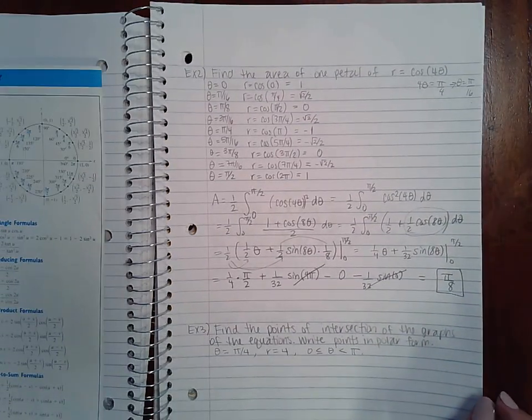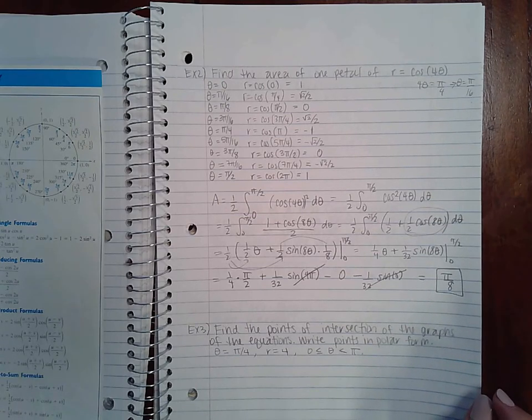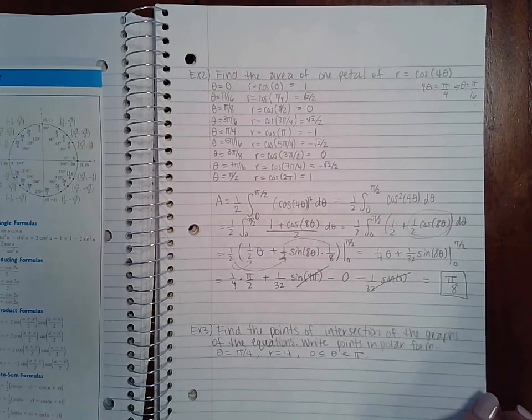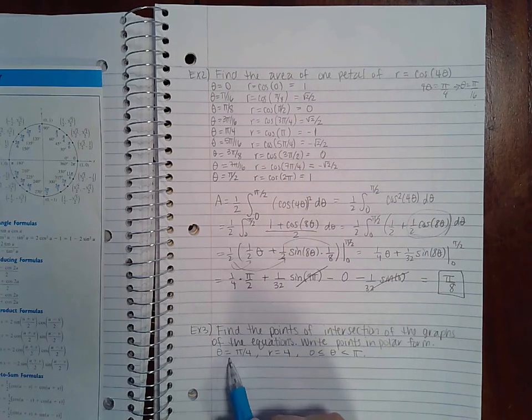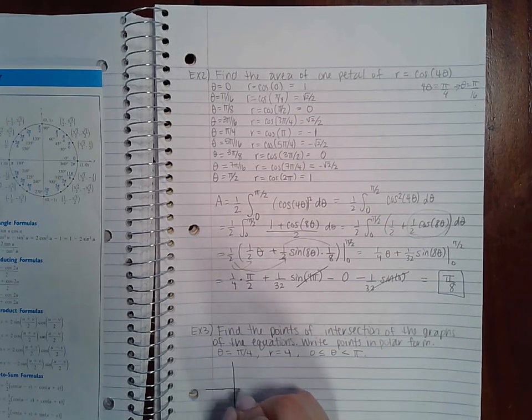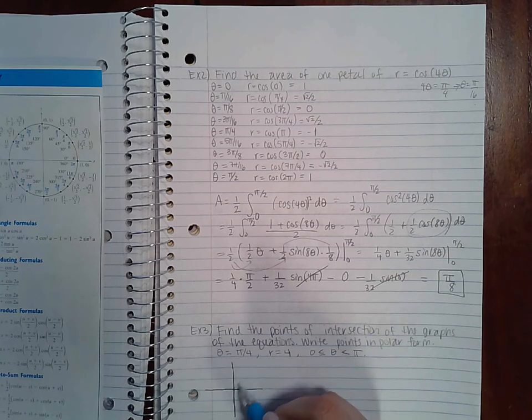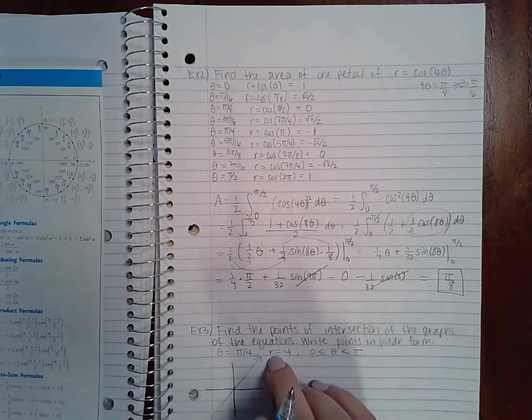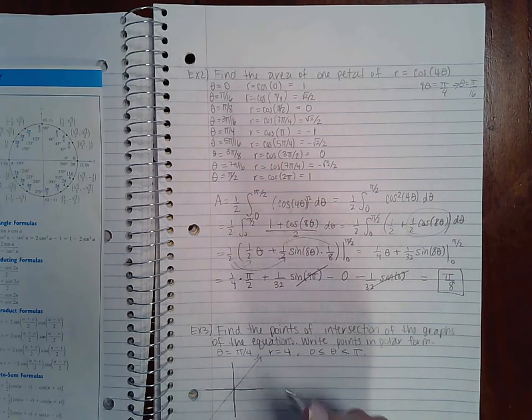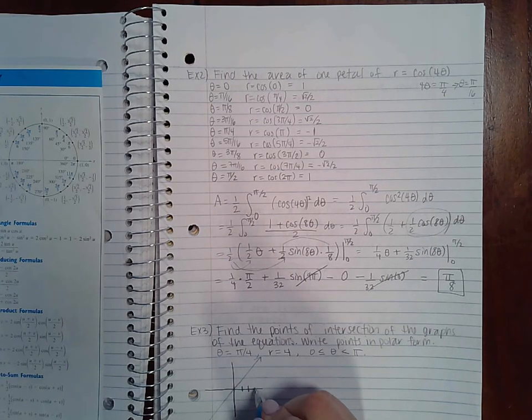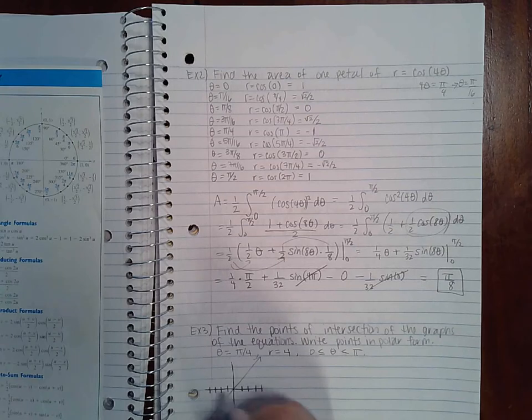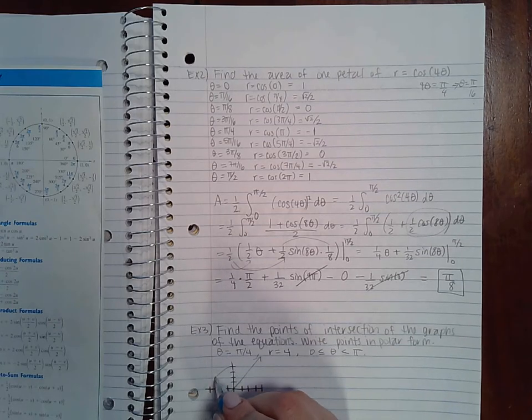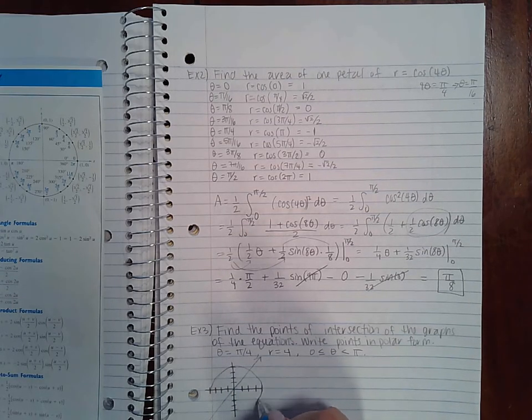Now on example 3, it says find the points of intersections of the graphs of equations and write your points in polar form. So remember, theta equal to pi over 4 is an entire polar axis. Here's pi over 4, it's this entire polar axis. Now remember that r equal to 4 is a whole circle. So if you go out 1, 2, 3, 4 units, you create that circle.